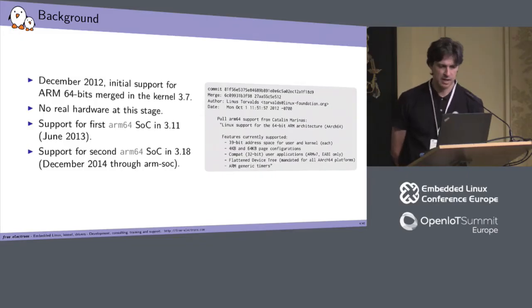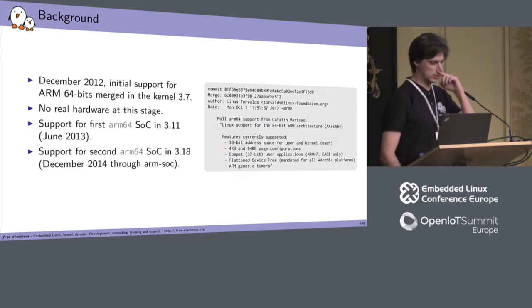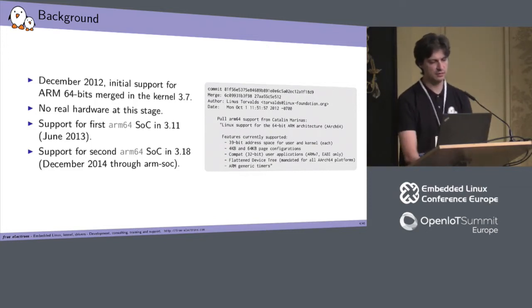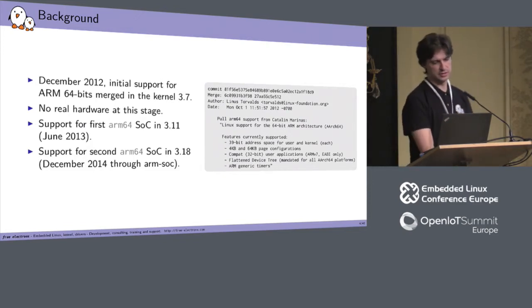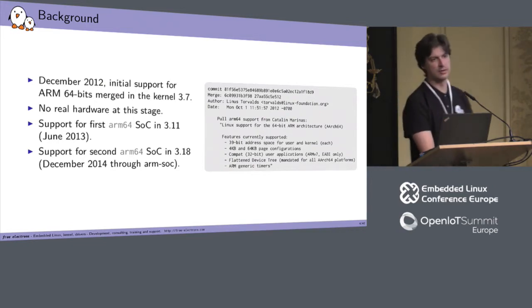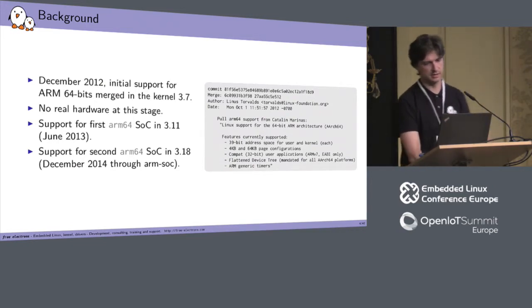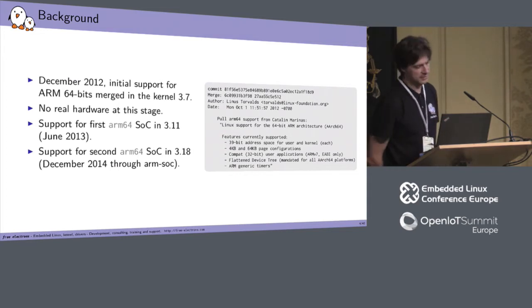I'm also a co-maintainer of the Marvel ABU subsystem architecture. Some background about this talk and the ARM64. In December 2012, there was an initial support of the ARM 64-bits, which was merged in kernel 3.7. Here's the first pull of it.